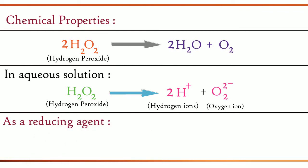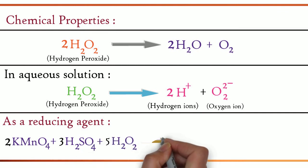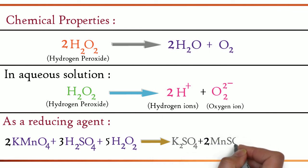The equation is as follows: 2 KMnO4 plus 3 H2SO4 plus 5 H2O2 gives K2SO4 plus 2 MnSO4 plus 8 H2O plus 5 O2. Potassium permanganate reacted with sulfuric acid and hydrogen peroxide gives potassium sulfate, manganese sulfate, water and oxygen.